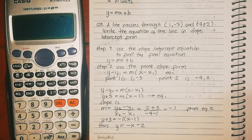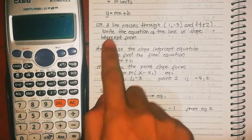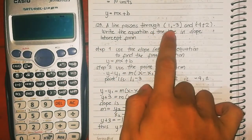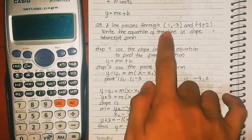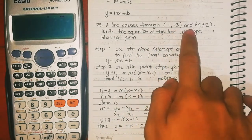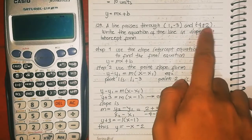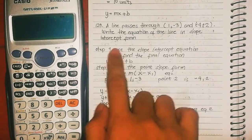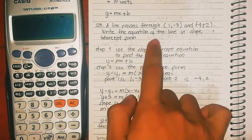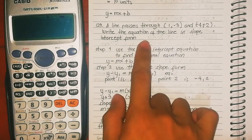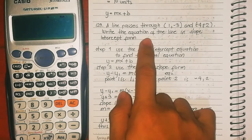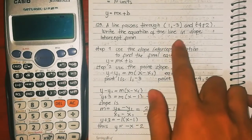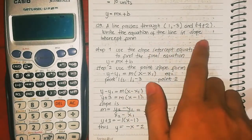Next problem: a line passes through (1, -3) and (-4, 2). Write the equation of the line in slope-intercept form. We will use the calculator technique to find the equation of the line in slope-intercept form.